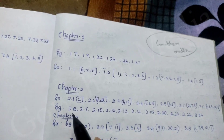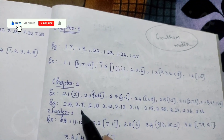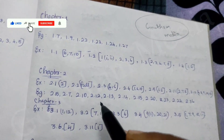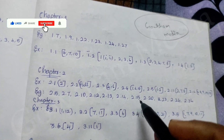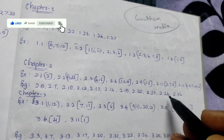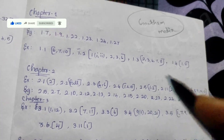Exercise: 2.5, 2.7, 2.10, 2.12, 2.13, 2.14, 2.15, 2.20, 2.23, 2.24, 2.20, 36.